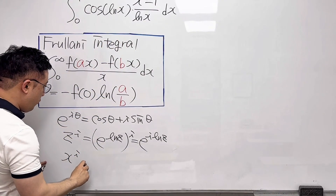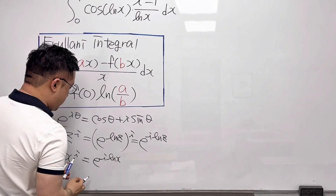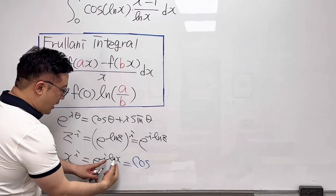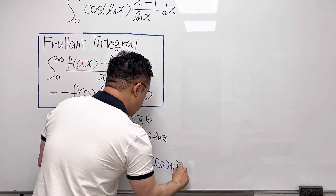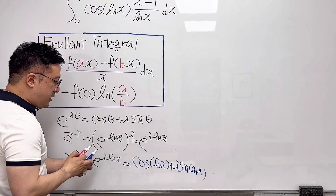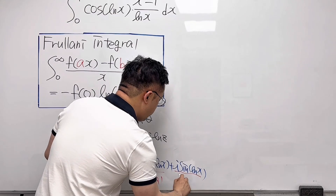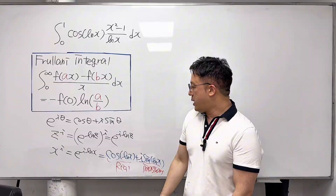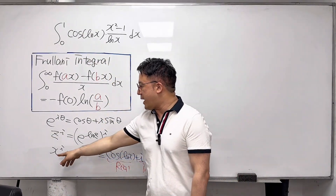Since our integral is based on the variable x, x^i can be represented as e^(i·ln x). This is the same as cosine(ln x) plus i times sine(ln x). So we can say cosine(ln x) is the real part of x^i, and the sine term is the imaginary part.